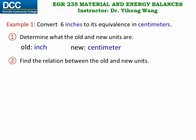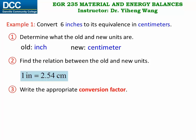The equalities used in unit conversion can be found either in your textbooks, or online, or even in your cell phone applications nowadays. We can find that the relation is one inch equals to exactly 2.54 centimeters. Then for the third step, we need to write the appropriate conversion factor based on this equality.